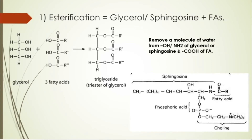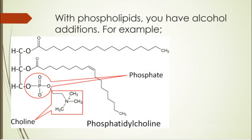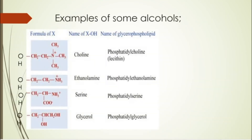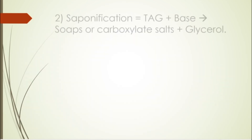If you were using sphingosine, this is what it would look like. With phospholipids, you have alcohol additions on the third or last carbon. First you have a phosphatidic acid because it's a phospholipid, then you have the alcohol — fatty acids for the first two groups, and a phosphoric acid on the third one attached to an alcohol. In this case the alcohol is choline, but the phosphate must always be present. Examples of alcohols include choline, ethanolamine, serine, glycerol, and inositol. The phospholipid names would be phosphatidylinositol or phosphatidylethanolamine.